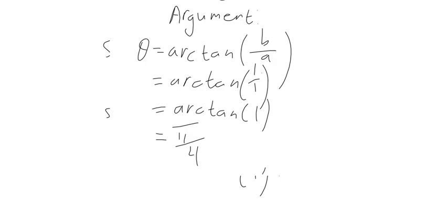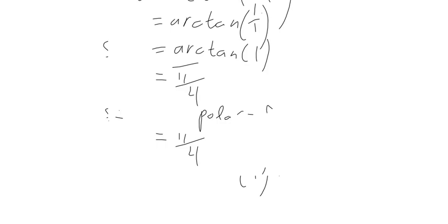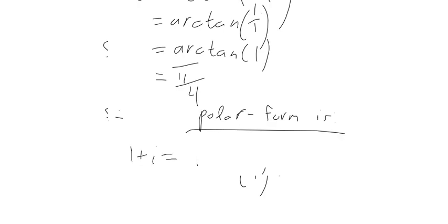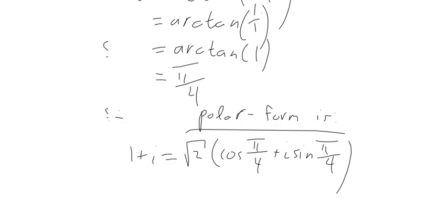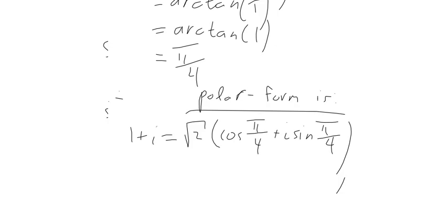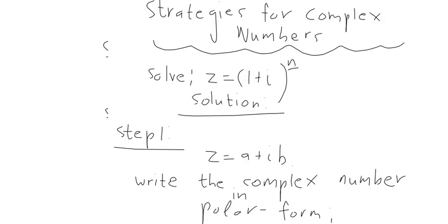So we already have the polar form. We're translating from the regular complex number to polar form to solve this problem. The polar form is: 1 + i equals √2 times (cosine(π/4) + i sine(π/4)). However, this is not our final result, because the solution has to be in terms of n — our problem asks for (1 + i) to the n — so we have to write the whole expression raised to the nth power.